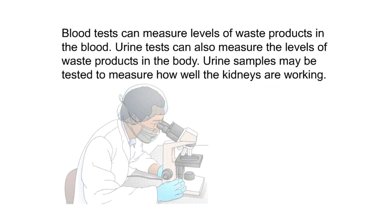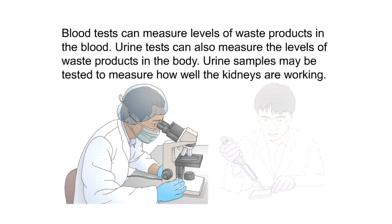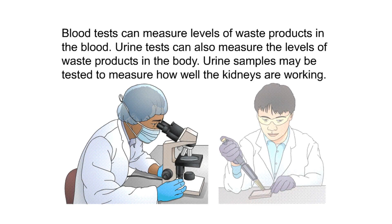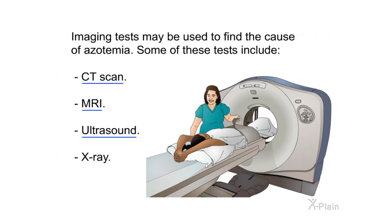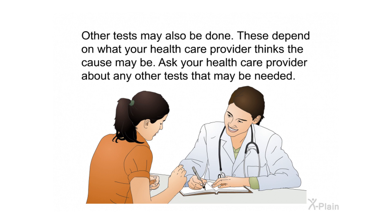Blood tests can measure levels of waste products in the blood. Urine tests can measure waste product levels and assess how well the kidneys are working. Imaging tests may also be used to find the cause of azotemia, including a CT scan, MRI, ultrasound, or X-ray. Other tests may be done depending on what your health care provider suspects as the cause.